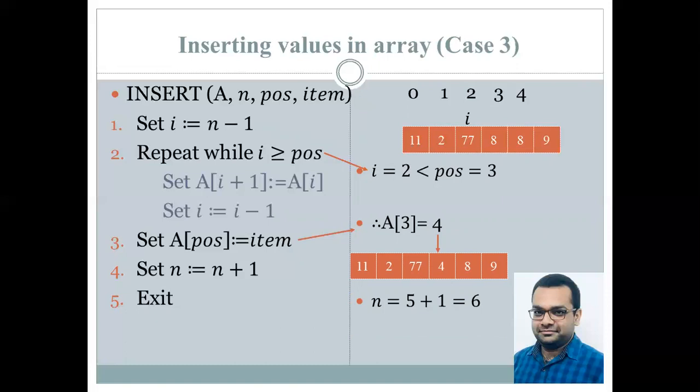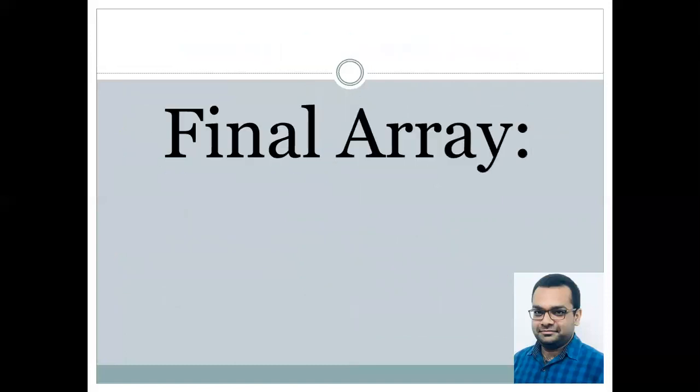Therefore, now our array becomes like this, where the value 4 gets inserted at the appropriate position. And the value of n becomes 5 plus 1, that is 6. Because now the array has 6 elements. Therefore, what is the final array?